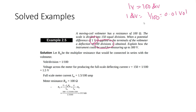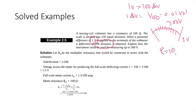We want the full scale of this meter to measure 300 volts. The internal resistance R is 100 ohm. For 300 volts divided by 100 ohm, we get three amperes.